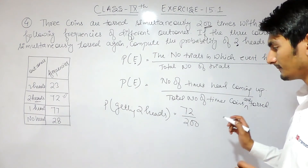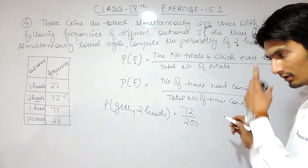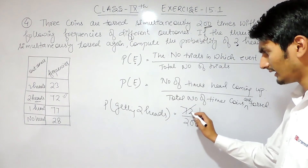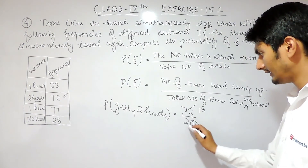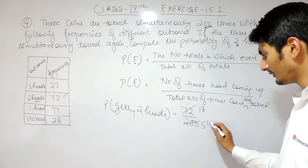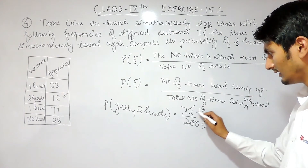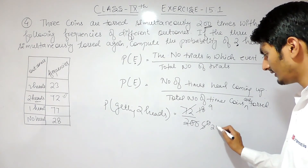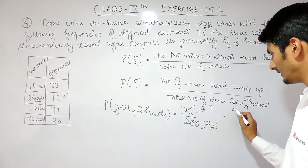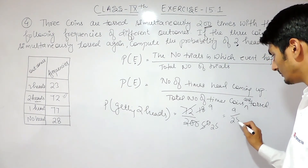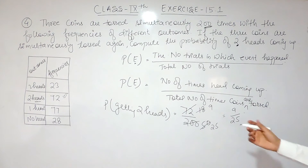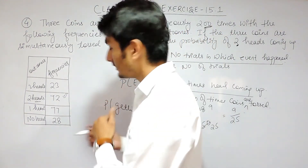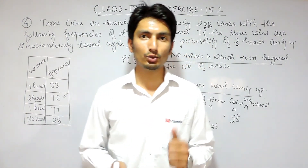Now simplifying 72 over 200: dividing both by 4 gives 18 over 50, and dividing again by 2 gives 9 over 25. So my answer is 9 upon 25, which is the probability of getting two heads.